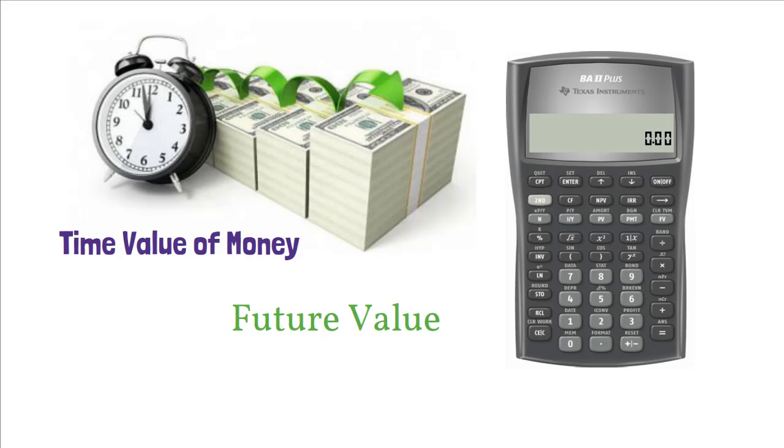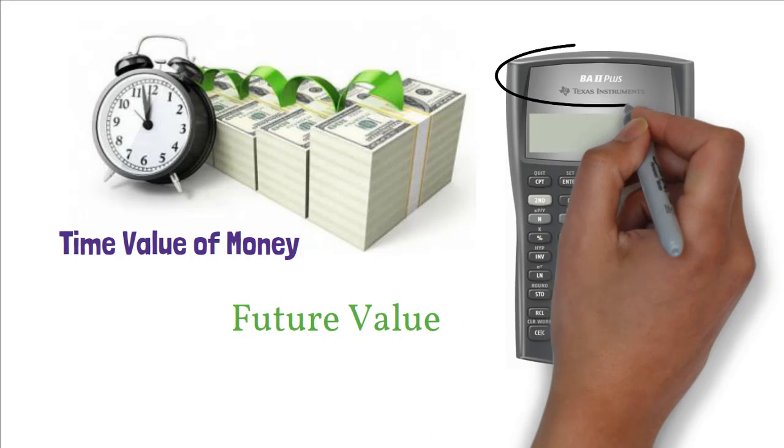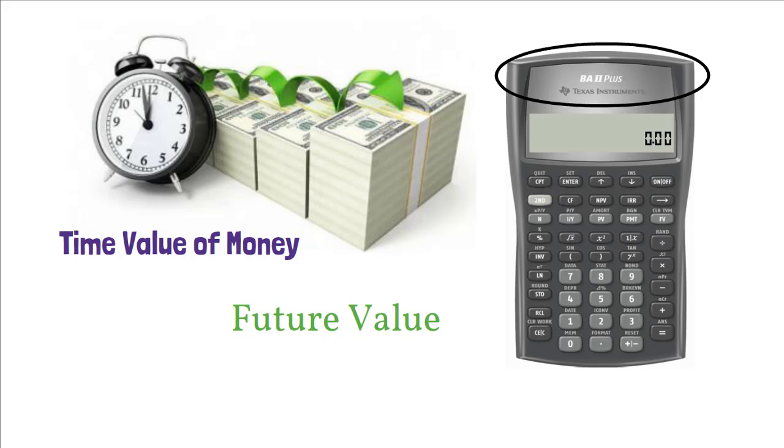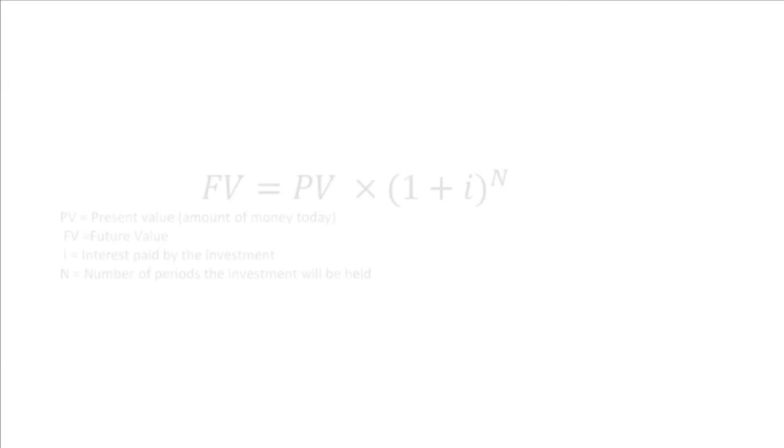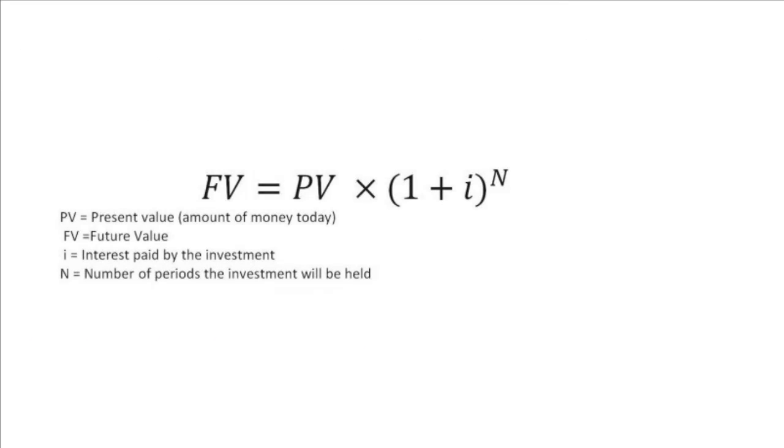The calculator I am using for this example is Texas BA2+. You just have to remember one formula to solve most of the time value of money problems. That is, future value equals present value times 1 plus i to the power n.